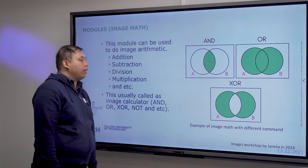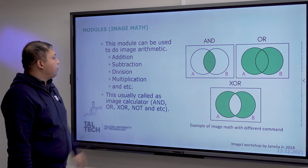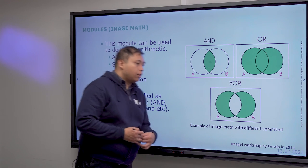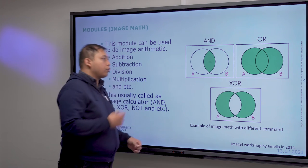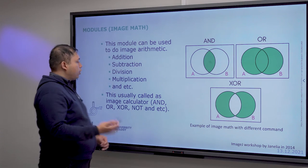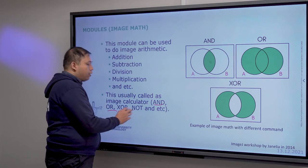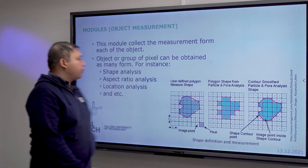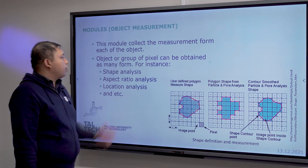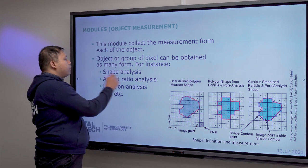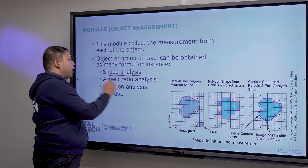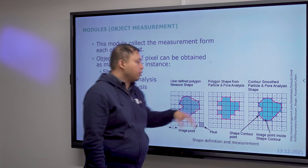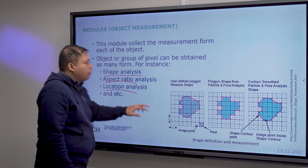You can also perform mathematical operations on image pixels — addition, subtraction, division — depending on your needs, both within a single image and between multiple images. Common operations include AND, XOR, OR, and others. Once you have detected objects, you can measure them based on pixels or use shape analysis tools such as circle, aspect ratio, location, and more, especially useful for droplets.